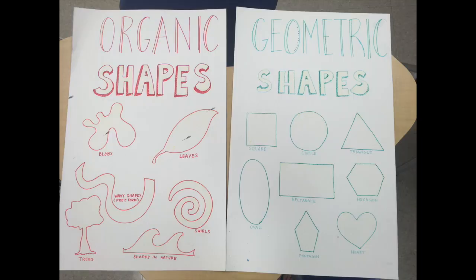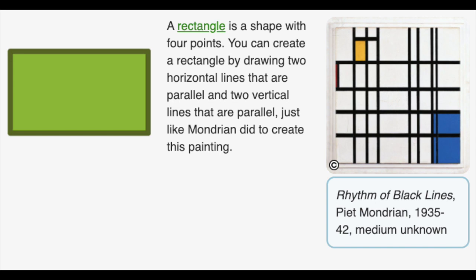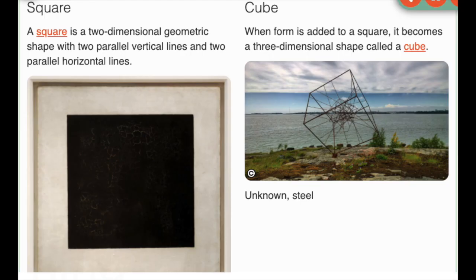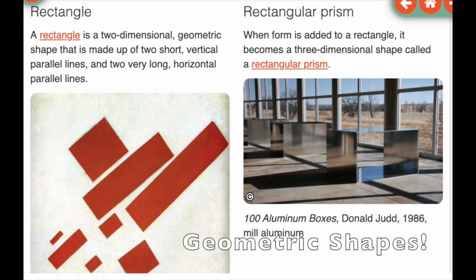Organic vs. geometric showdown. Is this geometric or organic? Geometric. Geometric or organic? Geometric. Geometric or organic? Organic. Geometric or organic? Geometric. Geometric — geometric. Geometric or organic? Geometric. Is this geometric or organic? Organic.